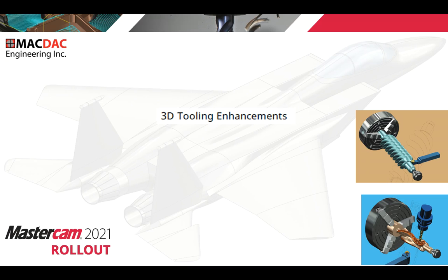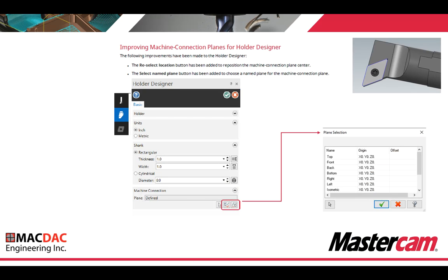3D tooling enhancements. Improving machine connection planes for Holder Designer. The following improvements have been made: the reselect location button has been added to reposition the machine connected plane center, and the select named plane button has been added to choose a named plane for the machine connection plane. Selecting the far right icon button gives a plane selection, so you can locate your tool in the top view or any view depending on the machine location of the tool.